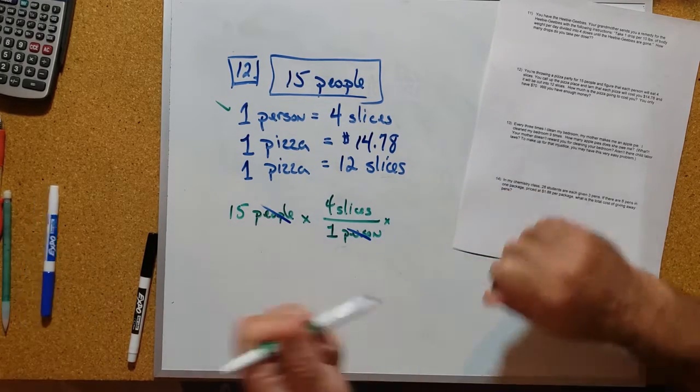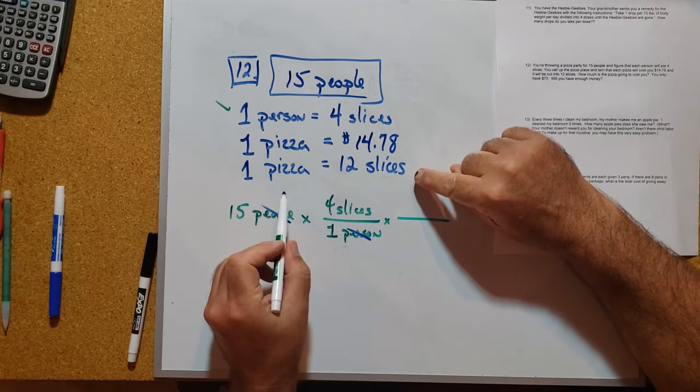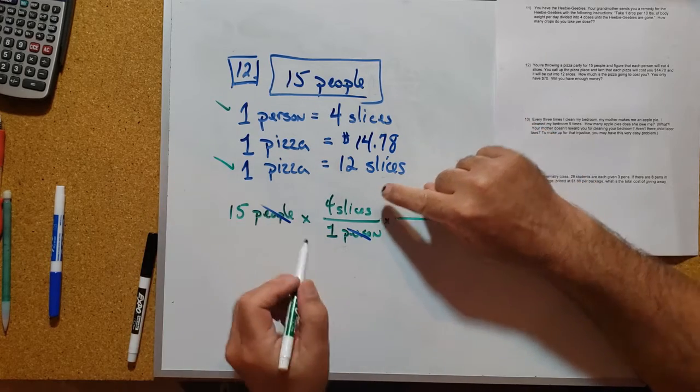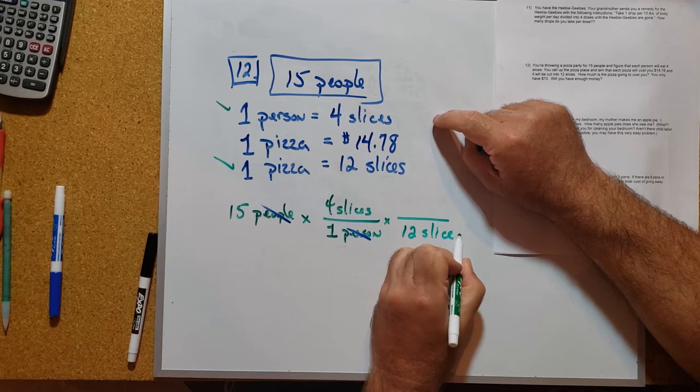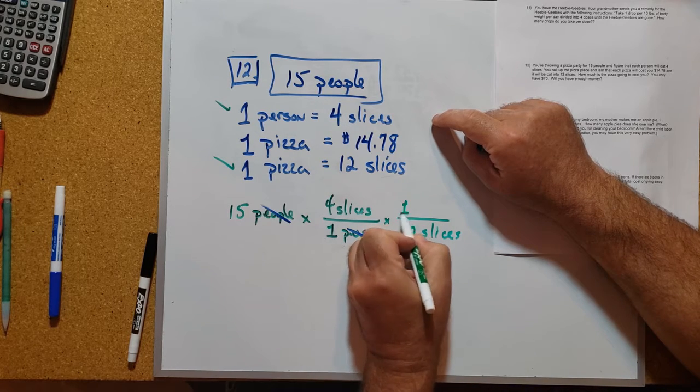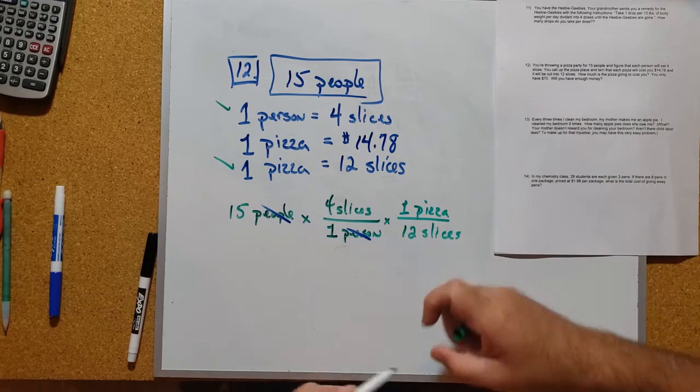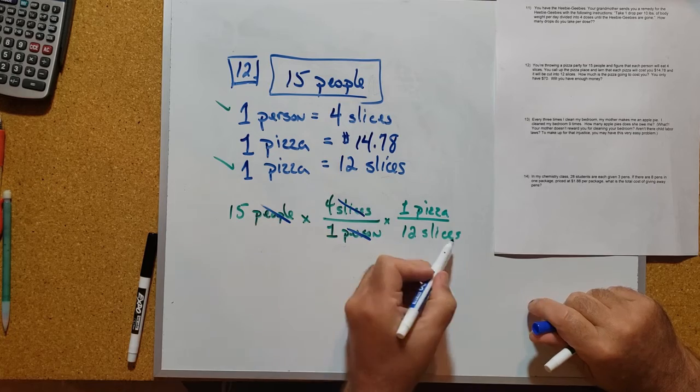Now we also know that here's a conversion factor that's got slices in it. Let's just stick that in: 12 slices is equal to one pizza pie. That allows us to cancel slices.